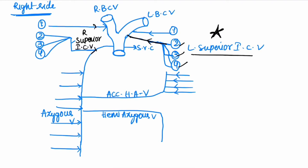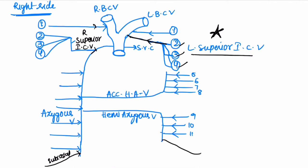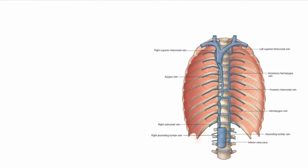The 9th, 10th, and 11th intercostal veins drain into the hemiazygous vein. We also have the subcostal veins below the 12th rib. On the right side, the subcostal vein drains into the azygous vein. On the left side, the subcostal vein drains into the hemiazygous vein.